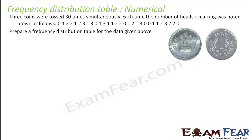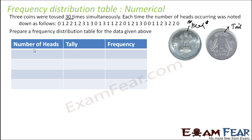3 coins were tossed 30 times, and each time the number of heads is recorded. Since you have tossed 3 coins, sometimes there are 0 heads, 1 head, 2 heads, or a maximum of 3 heads. We have to prepare a frequency distribution table. The minimum number of heads is 0 and the maximum is 3, so let us do a tally.